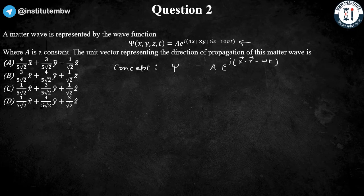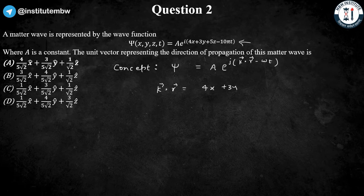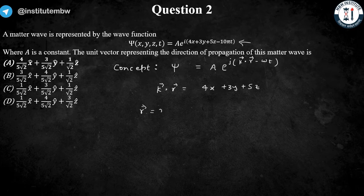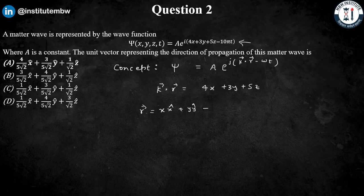If we compare, then k⃗·r⃗ = 4x + 3y + 5z. And if we assume r⃗ = x x̂ + y ŷ + z ẑ,